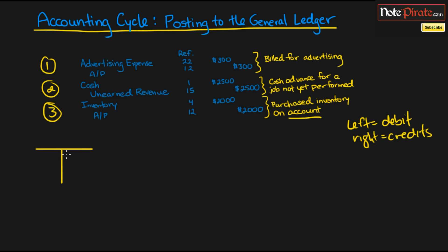What will our first T-account be? That's what the reference number is for — it shows us the order in which we list our T-accounts. Starting with cash, we put cash at the top and put the reference number, which is one, right beside it.